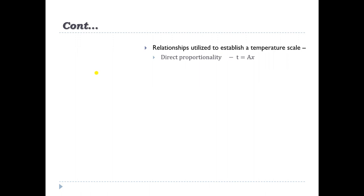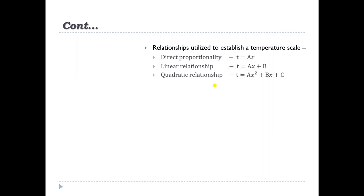When the relationship is directly proportional, we use the expression T = ax, where T is the temperature measured, a is a constant of the thermometer or device, and x is the physical characteristic. When the relation is linear, we use T = ax + b, where a and b are constants and x is the thermometric property. If it is a quadratic relation, we use T = ax² + bx + c.